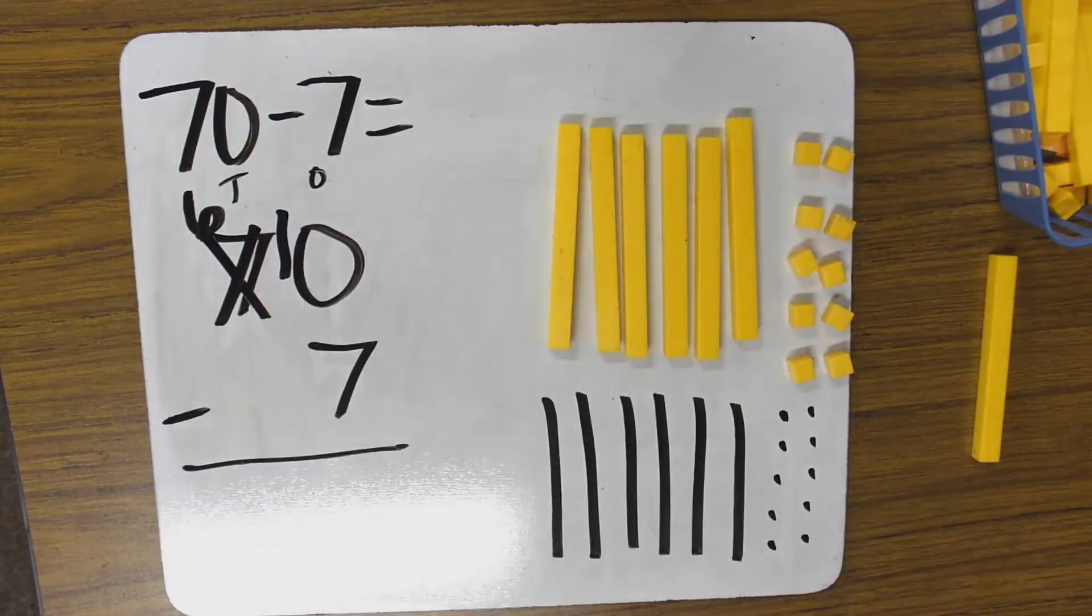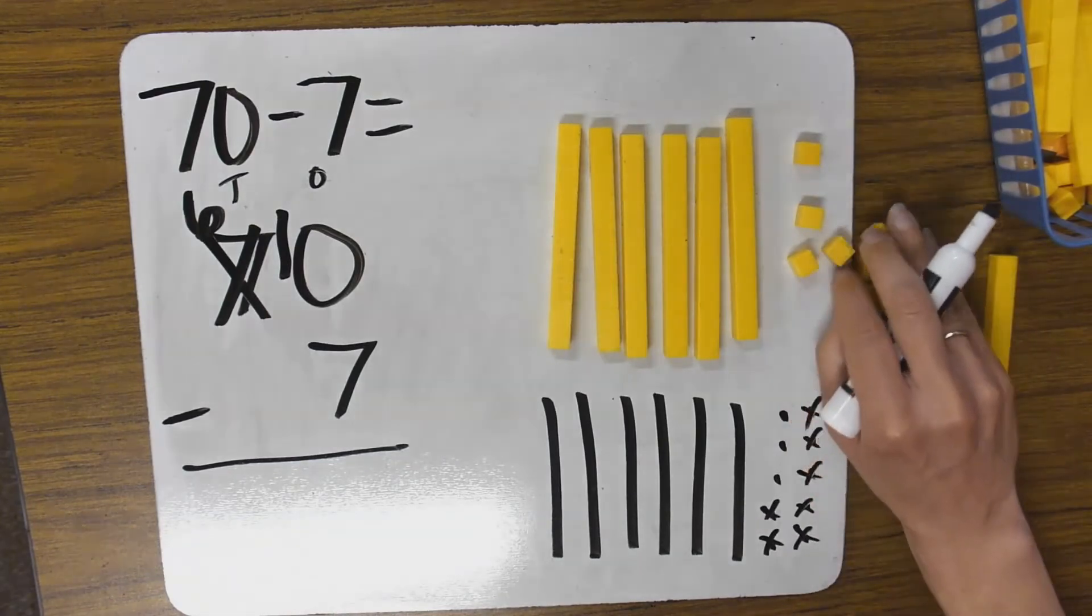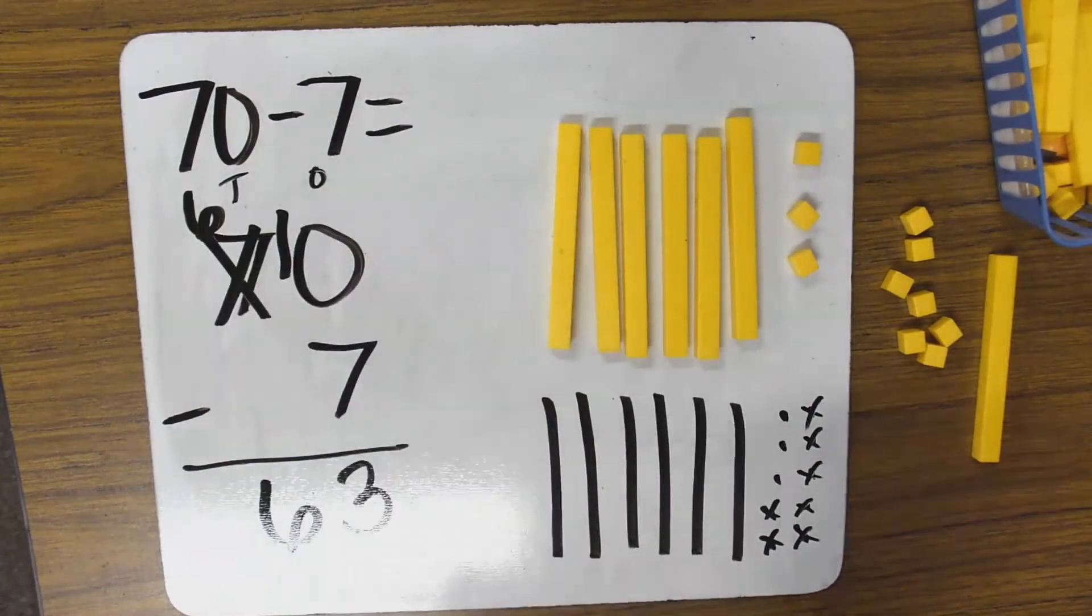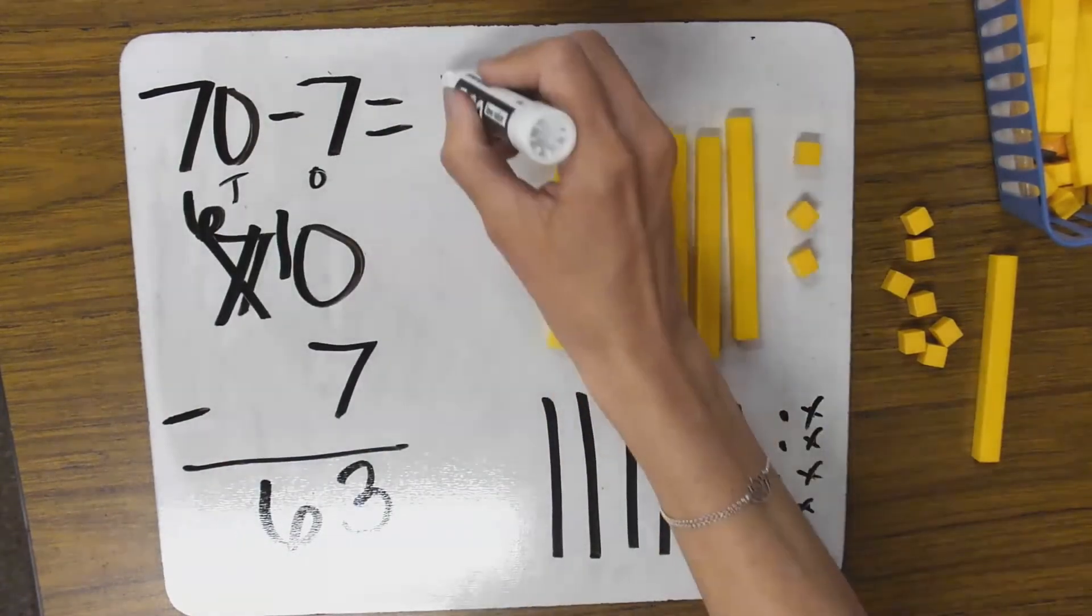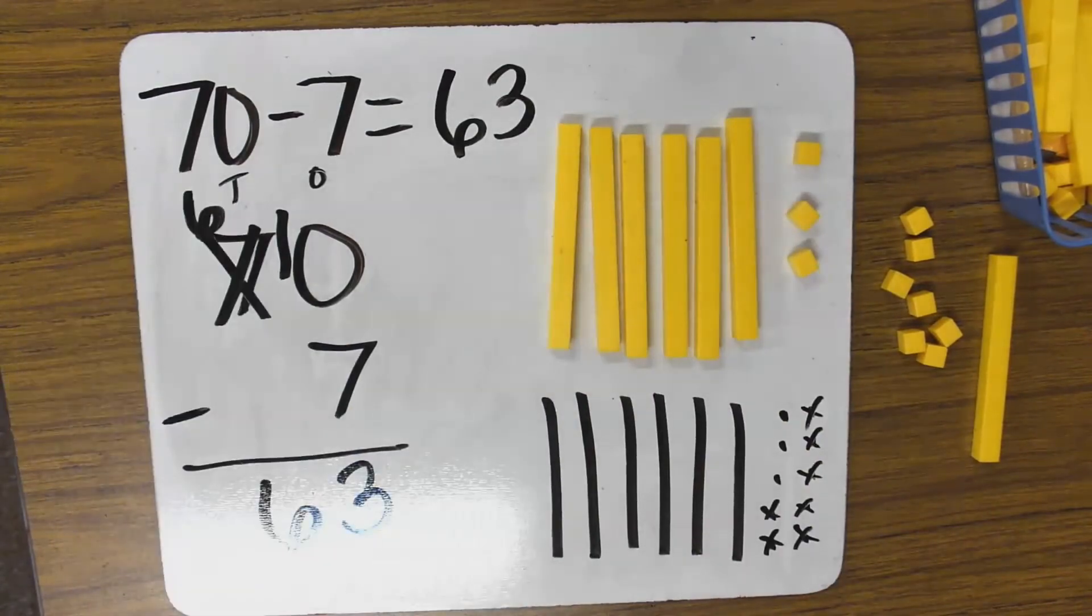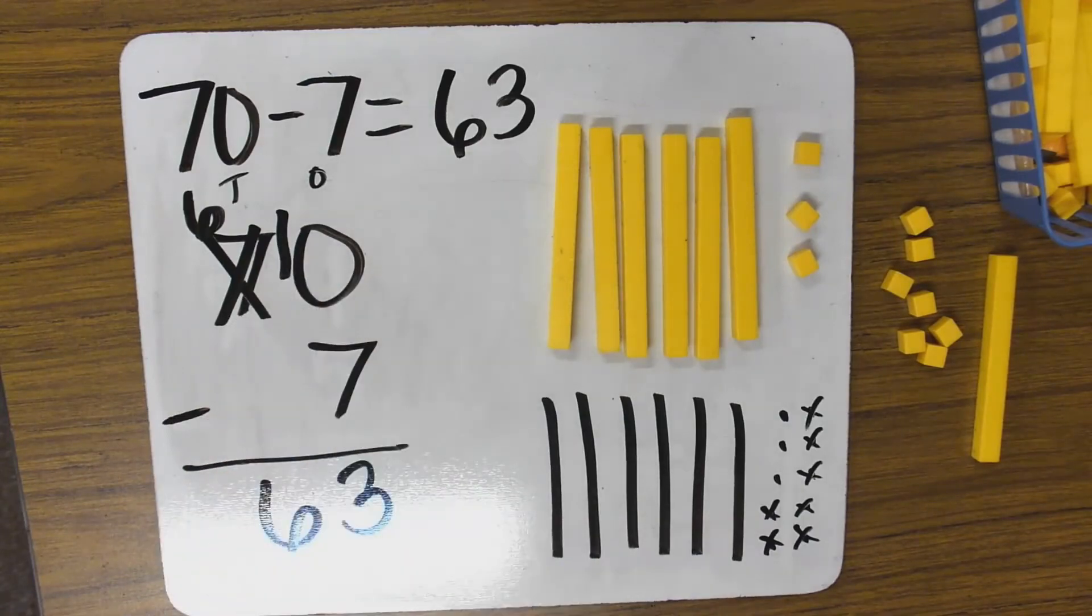Now can I take away 7? I can. And if you already know this fact with your mental math, you can go ahead and fill it in. I'm left with 3 1s. I have 6 10s. There I'm left with 63. If I had started with the 10s, I would have thought there were 7 10s. So that's why we always start with the 1s in case we need to regroup.